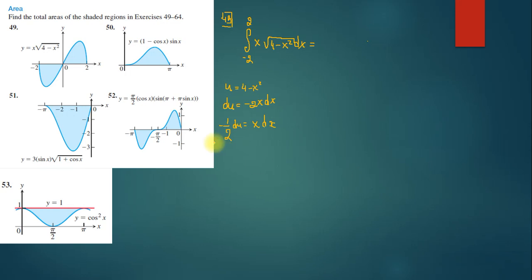We solve exercise 49 of section 5.6, where we need to find the total area of the shaded regions. We have the function y = x√(4 - x²), which is a symmetric function. We need to find the area of each symmetric part and add them together.